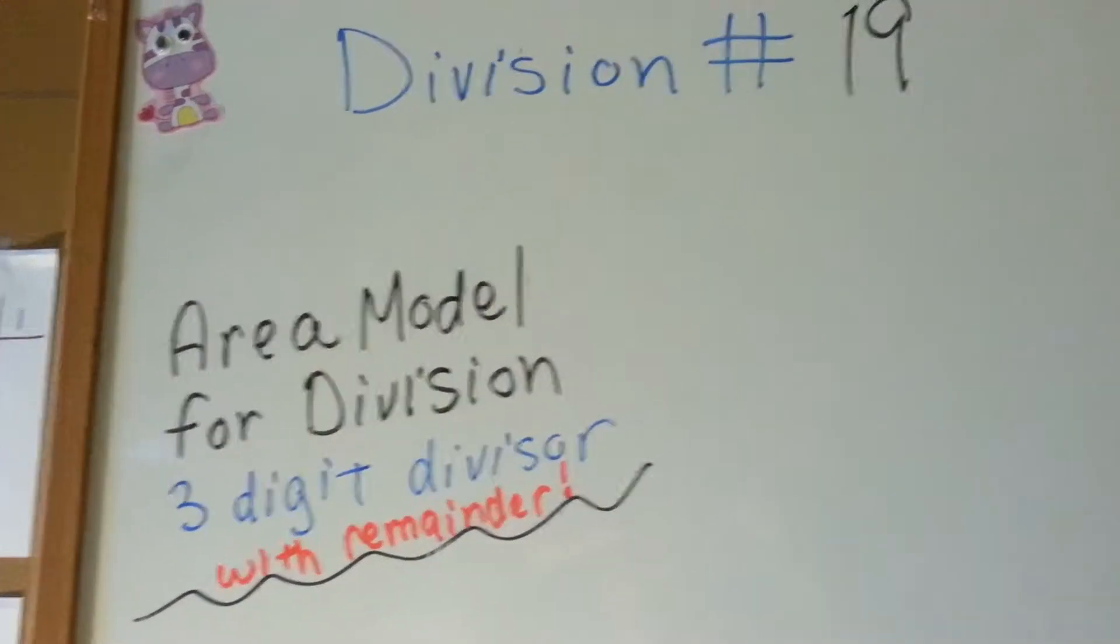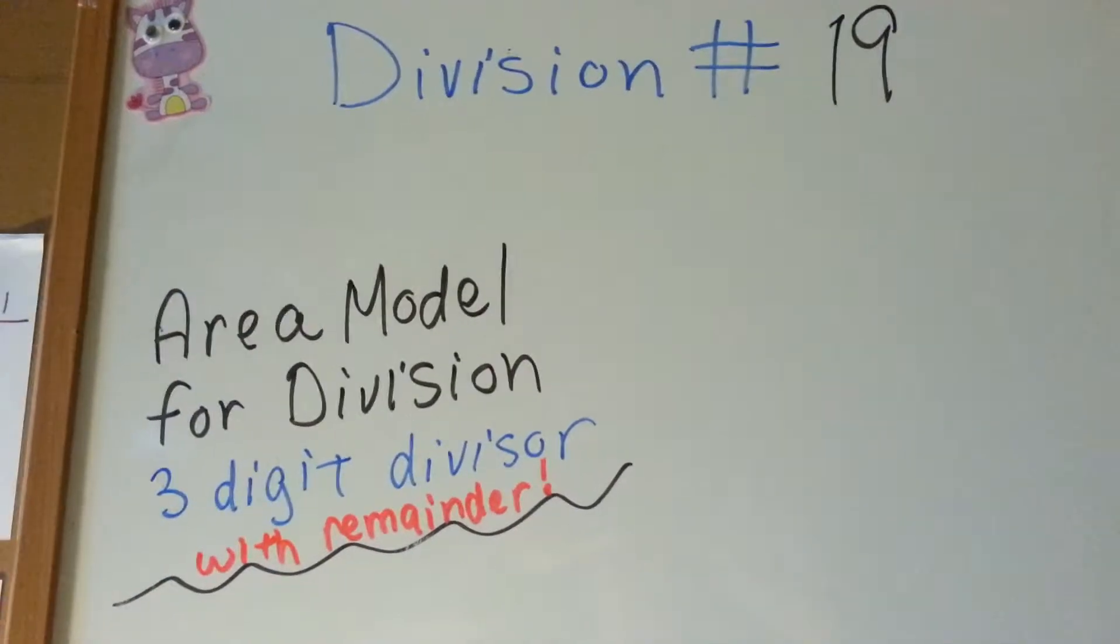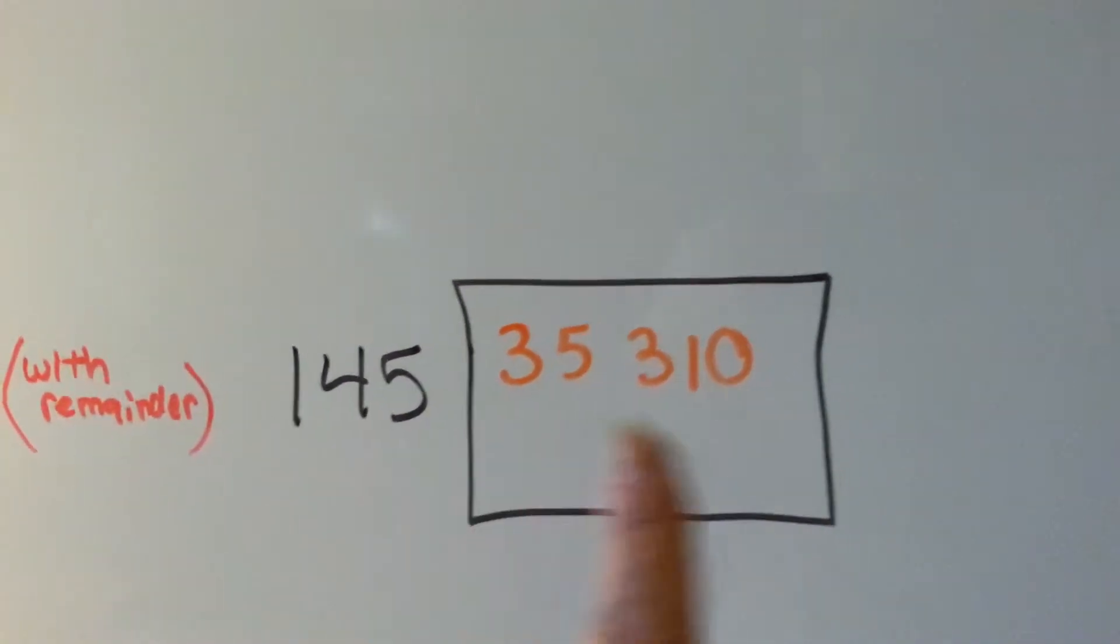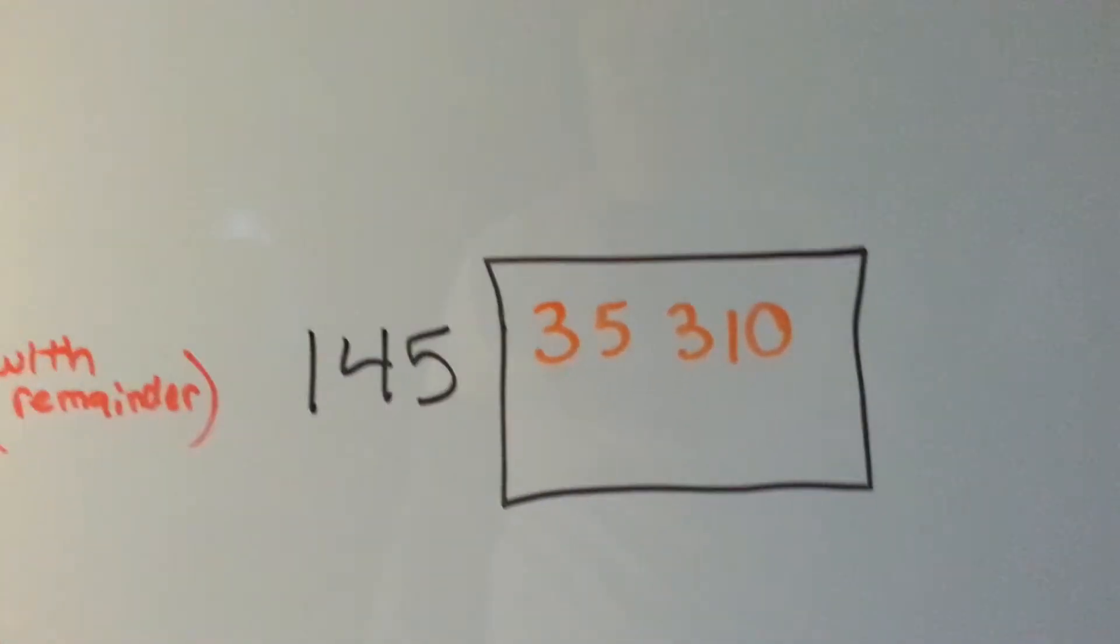Area model for division with a three-digit divisor with a remainder. So, this is the number we have, and we're going to have a remainder left over, and I did that on purpose to show you what we do with the remainder.